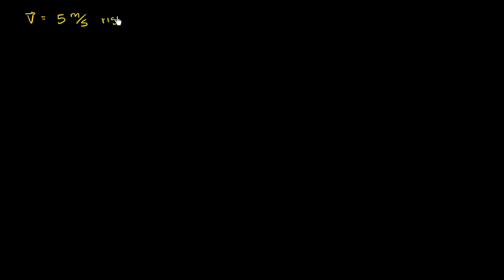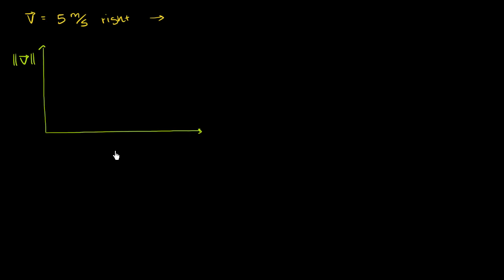Let's say I have something moving with a constant velocity of 5 meters per second, and we're just assuming it's moving to the right to give us a direction, because this is a vector quantity. Let me plot its velocity against time. I'm actually going to only plot the magnitude of the velocity on the vertical axis, and on the horizontal axis I am going to plot time. So we have a constant velocity of 5 meters per second — its magnitude is 5 meters per second, and it's constant. As the seconds tick away, the velocity does not change.